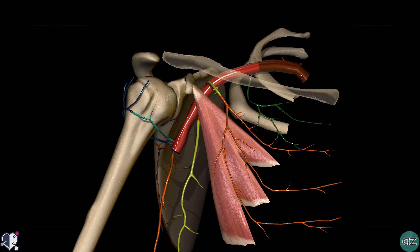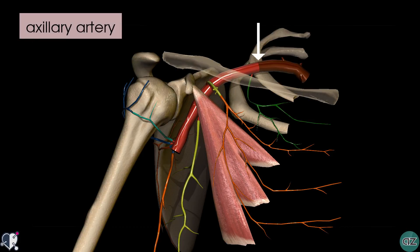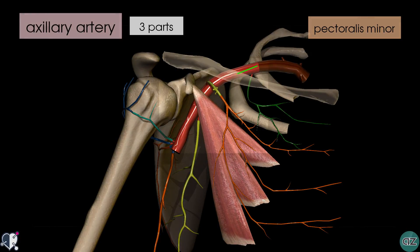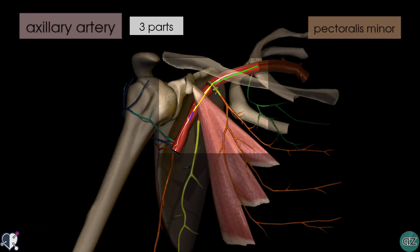We're now looking at an isolated view of the axillary artery and its branches. You can see the subclavian artery crossing the lateral border of the first rib to become the axillary artery. Also on the model, you'll notice the pectoralis minor muscle, which you can see originating on the coracoid process of the scapula. The importance of the pectoralis minor muscle is that it runs in front of the axillary artery and divides it into three parts. The first part lies proximal to the pectoralis minor, the second part lies underneath it, and the third part lies distal to it.